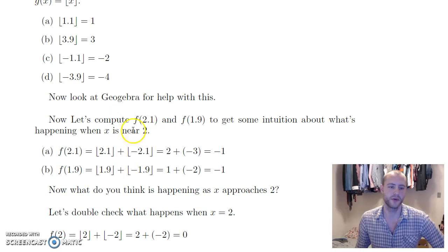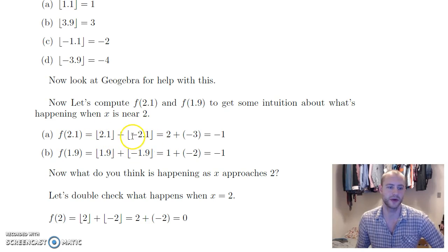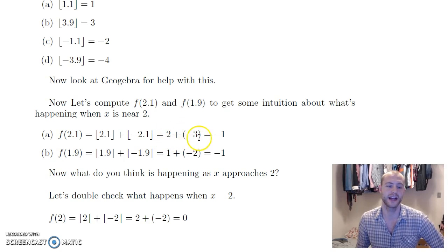Let's put in f(2.1). I'm just replacing the x's with 2.1's, so it's floor(2.1) plus floor(negative 2.1). Now I get to individually compute each part. Floor(2.1) — since 2 is the integer to the left of 2.1 — it's 2. Floor(negative 2.1) — since negative 3 is the integer to the left of negative 2.1 — it's negative 3. And then these two together give us negative 1.